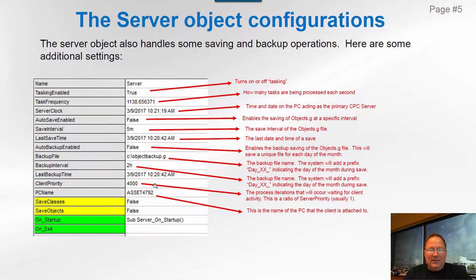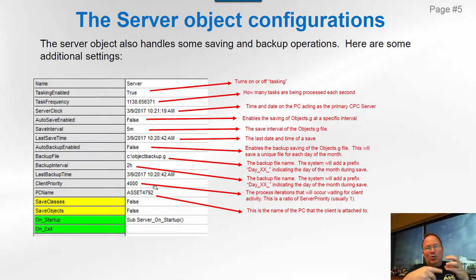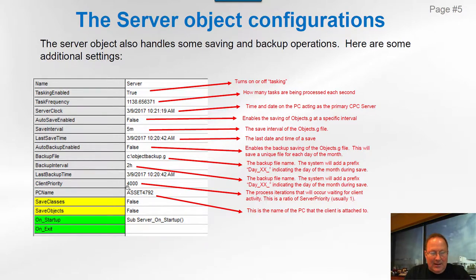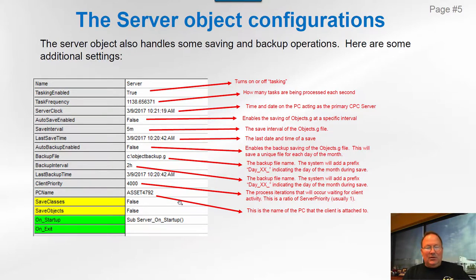Client priority is important. When the server starts addressing client interactions, it goes into a quick single for-next loop and stays there for this number of iterations before moving on back to tasker processing. The higher the value, the more time you're giving clients to grab information — it'll make clients more responsive, but it'll also slow down the server. The PC name is the name of the attached server PC. On startup is a quick script run when CPC server starts; on exit runs when you exit CPC.